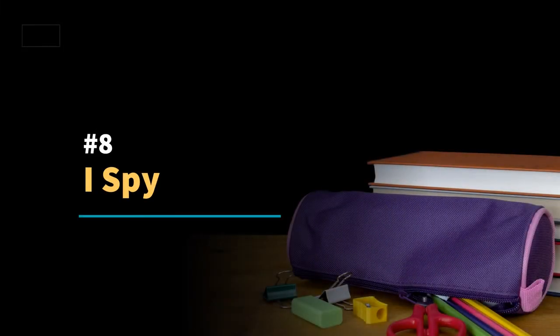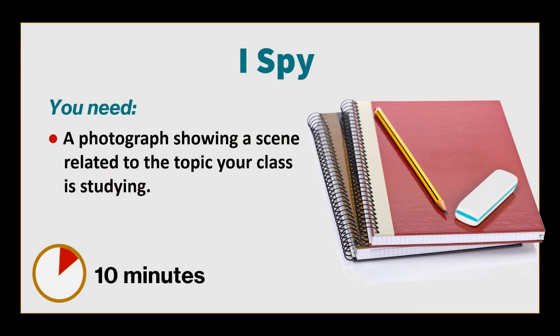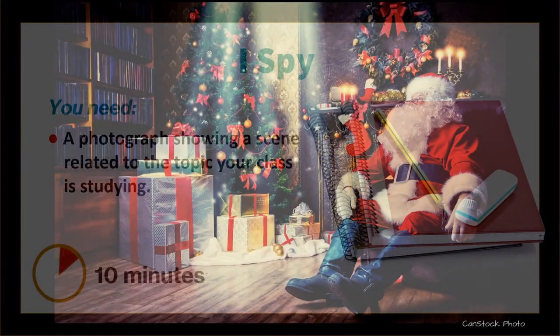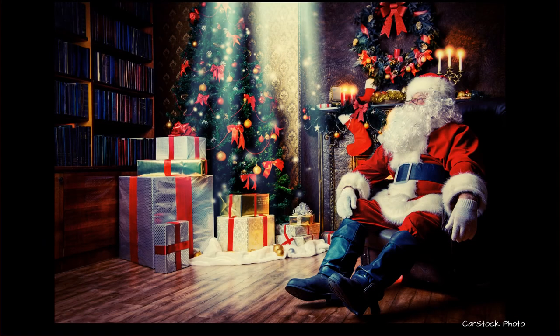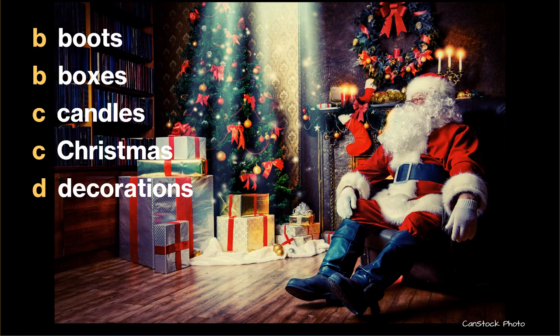I spy is a good activity for younger students. Use a photograph related to your study topic, name a letter of the alphabet, and have students identify anything beginning with that letter. This activity encourages students to carefully analyse a photograph for information. It also helps if you can project the photograph up on a screen so the students can easily see the details in it.